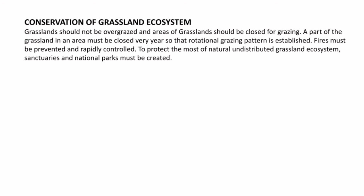Conservation of grassland ecosystem: grasslands should not be over-grazed, and areas should be closed for grazing in rotation — a part of the grassland must be closed every year so that a rotational grazing pattern is established. Fires must be prevented and rapidly controlled to protect the natural undisturbed grassland ecosystem. Sanctuaries and natural parks must be created. Grasslands must be protected because they prevent landslides and help maintain underground water, so that the ecosystem can follow its cycle continuously.